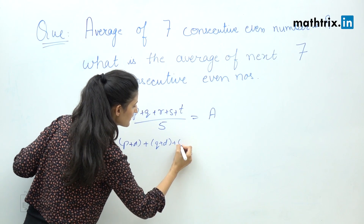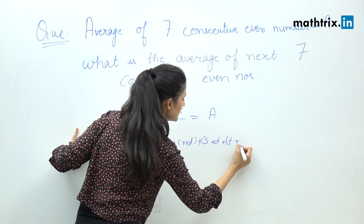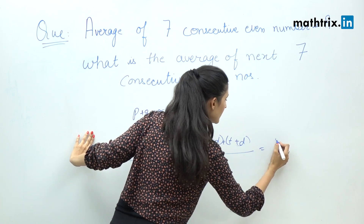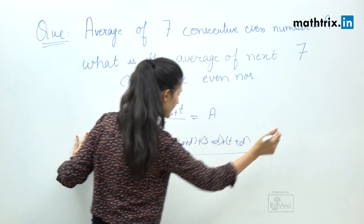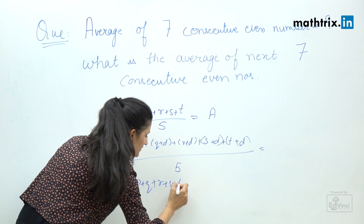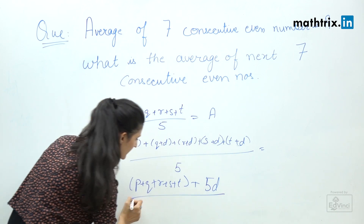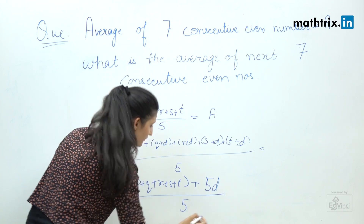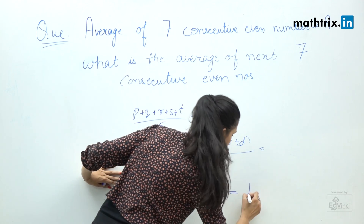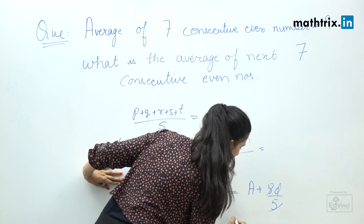The new average will be: (p plus q plus r plus s plus t) plus 5d, all divided by 5. This simplifies to (p plus q plus r plus s plus t) divided by 5, plus 5d divided by 5, which is nothing but a plus d.